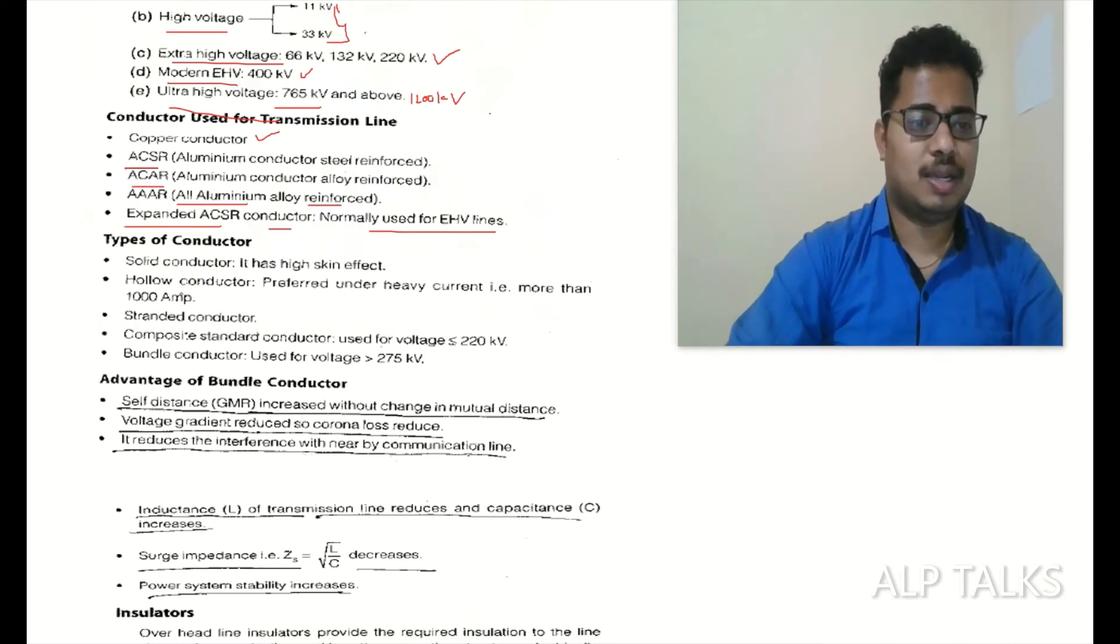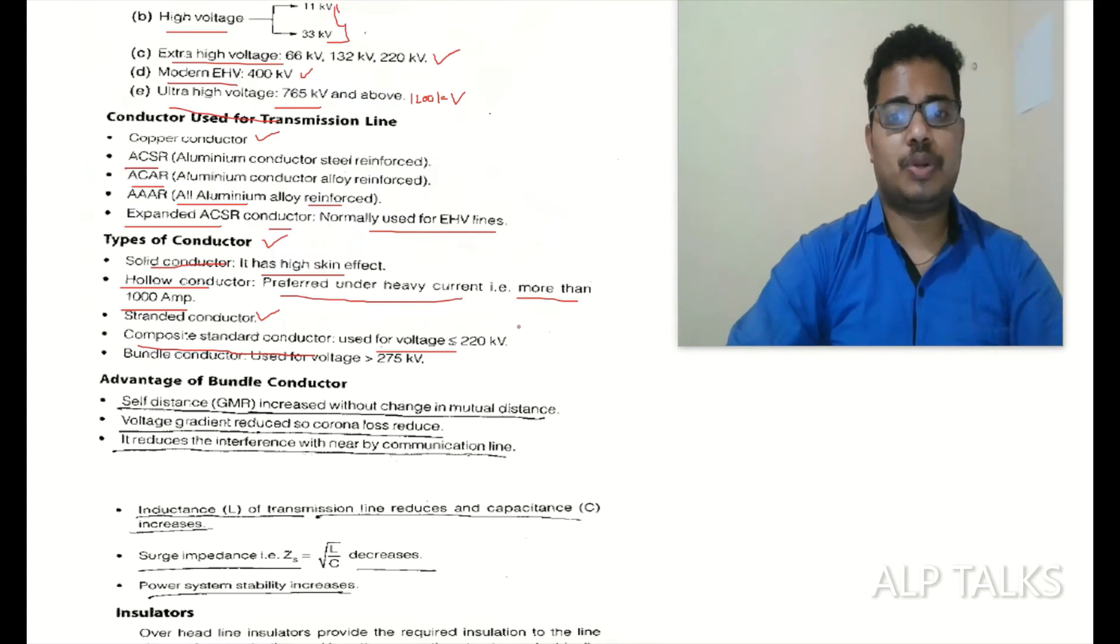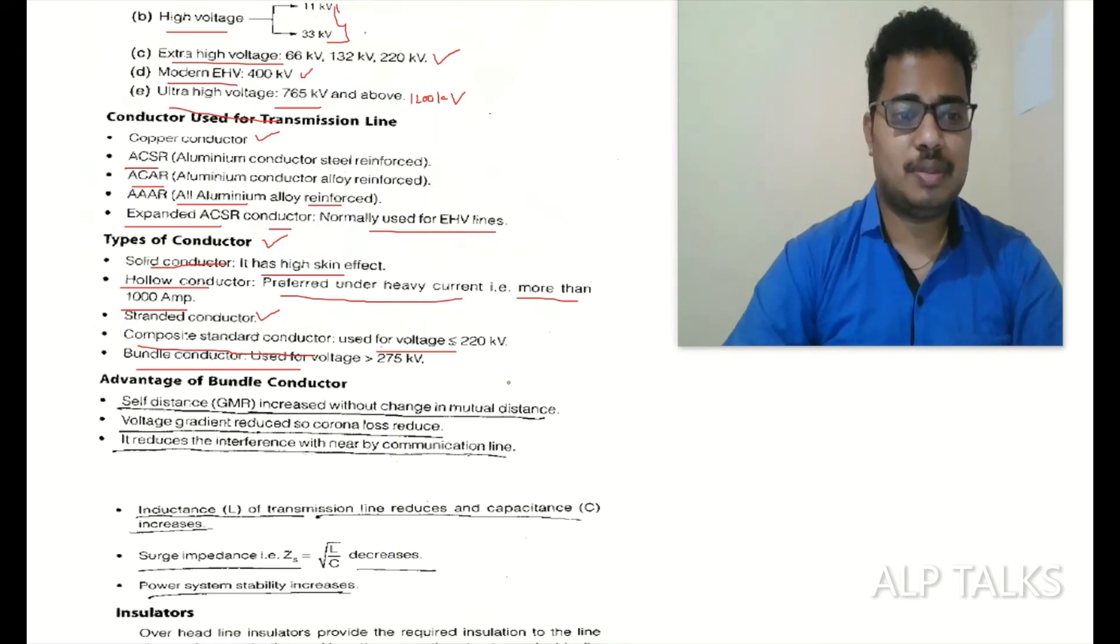Types of conductors: solid conductor - it has high skin effect. Hollow conductor - preferred under heavy current more than 1000 amps. Standard conductor - composite standard conductor used for voltage less than or equal to 220 kV. Bundle conductor - used for voltage greater than or equal to 275 kV.